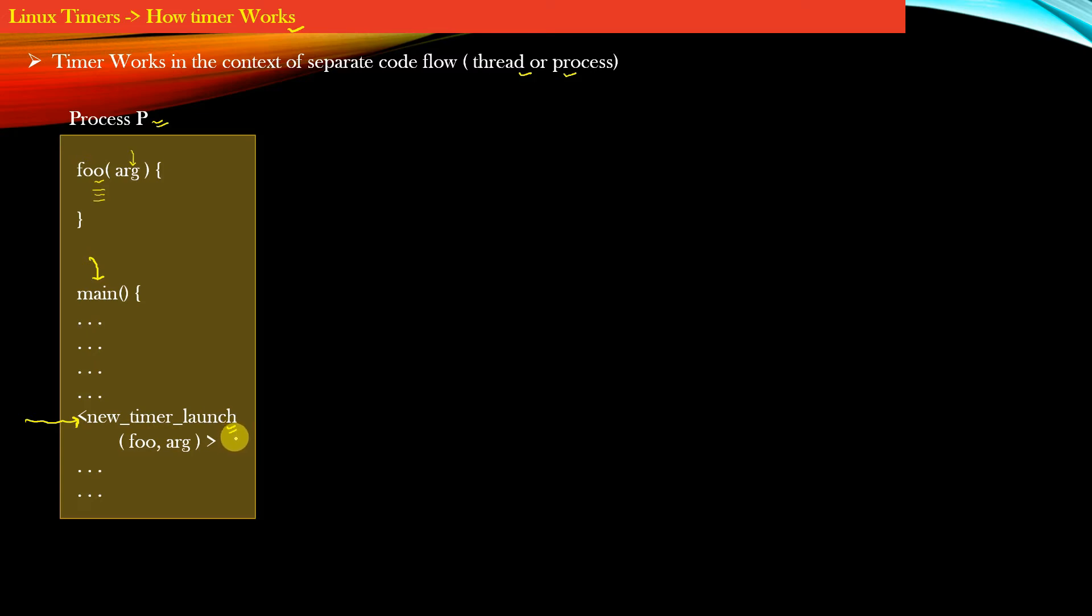Now note that your application starts a timer because your application wants to do some unit of work when the timer expires. That unit of work which is done as a result of timer expiration is represented by this function foo.